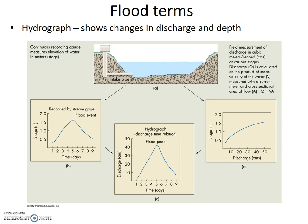Looking at the stage-versus-discharge hydrograph: notice the shape of the line is not a bell curve, nor a straight line. It curves with a steeper slope at lower values (toward the left) and a shallower slope at higher values (to the right). This means that at lower values, stage is increasing faster than discharge, and at higher values, discharge is increasing more than stage. Why is that?